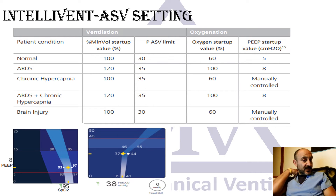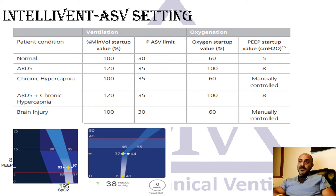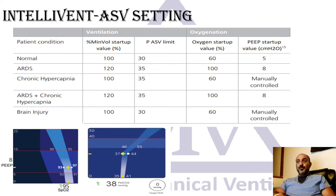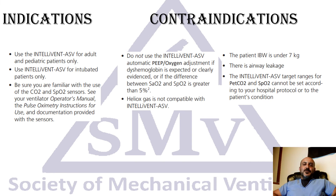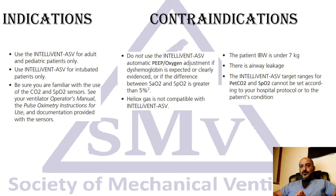One caution: if the patient is markedly tachypneic and end-tidal CO2 is low, the ventilator might decrease percent minute ventilation and pressure support, which could increase the work load on the patient — so clinical vigilance is still required. Regarding indications and contraindications for ASV: to my knowledge, it can be used for any intubated patient with any condition. You can achieve adequate oxygenation and ventilation with practically any mode, and there is no specific disease where ASV is uniquely indicated or contraindicated.